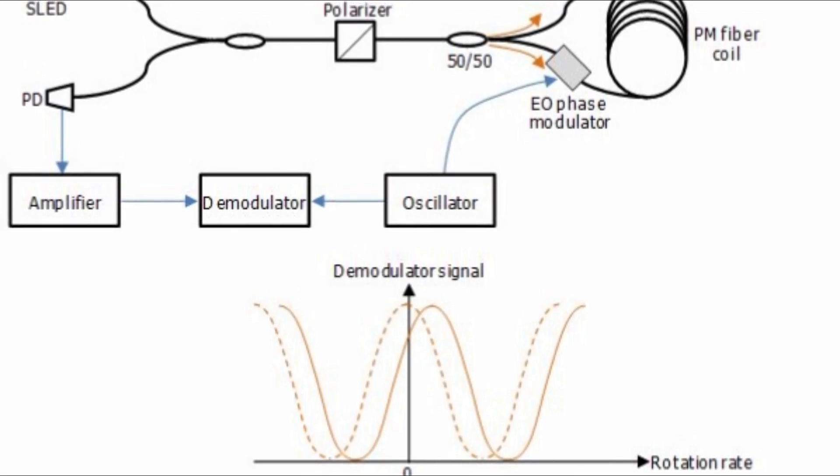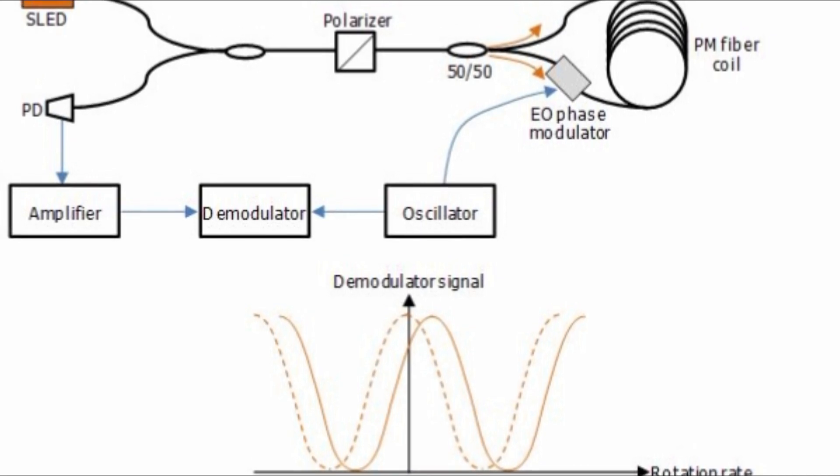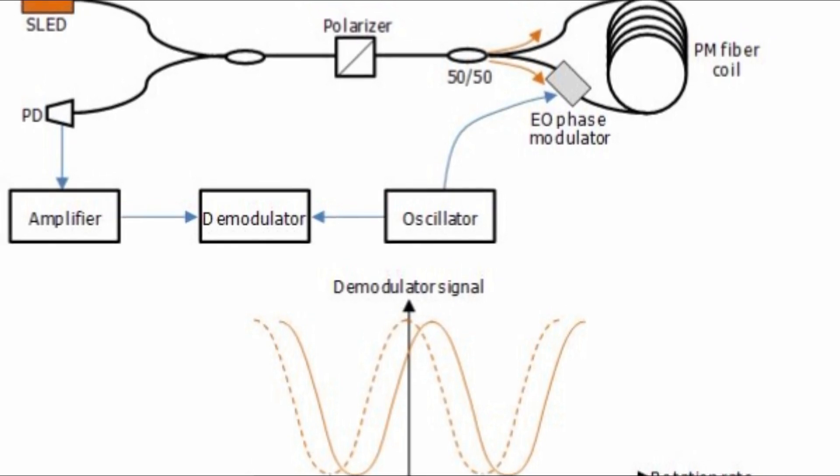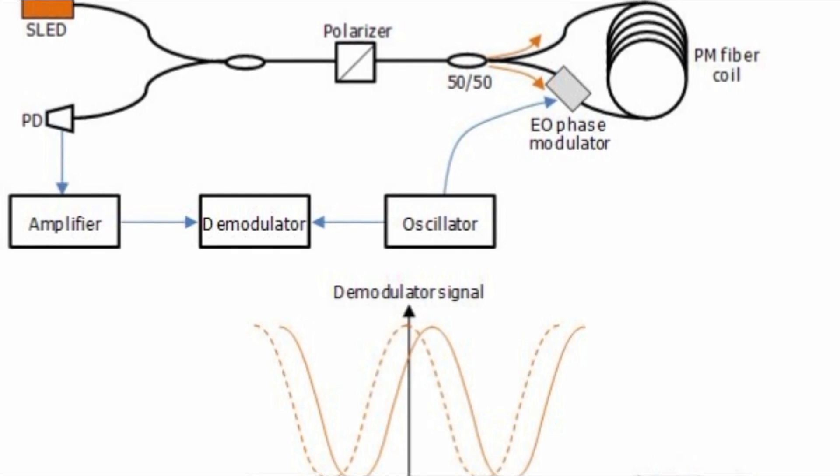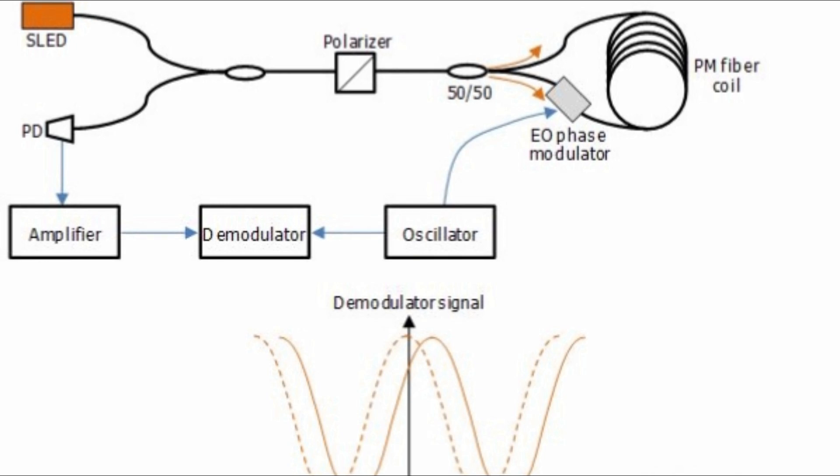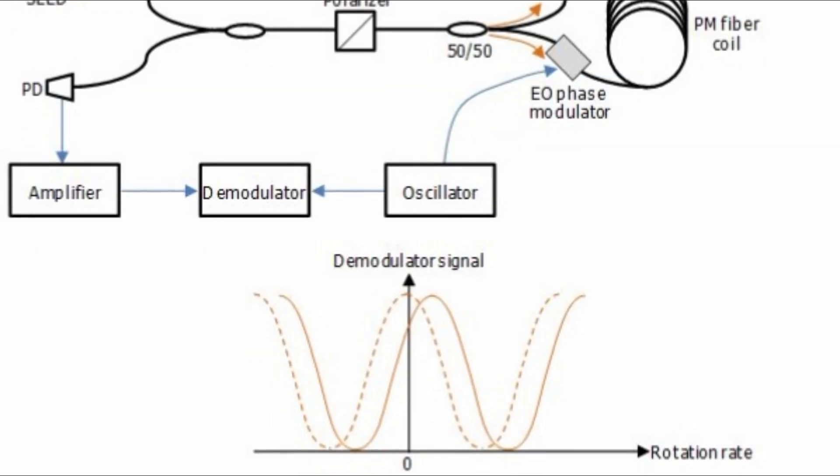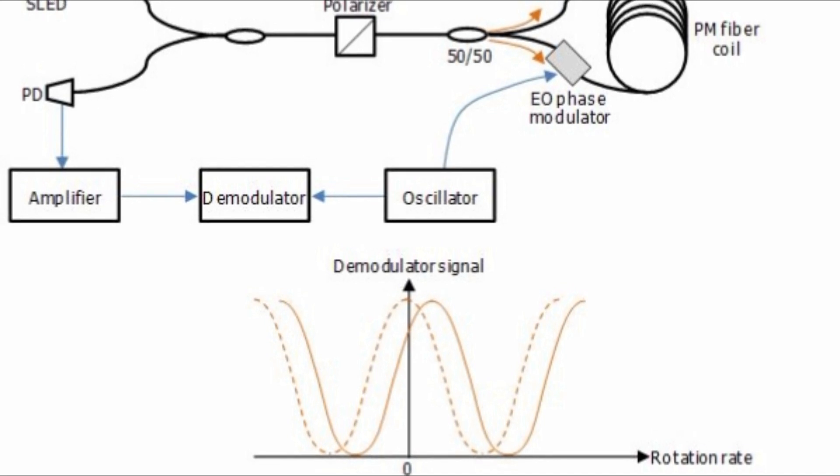The fiber optic gyroscope typically shows a higher resolution than a ring laser gyroscope but suffered from greater drift and worse scale factor performance until the end of the 1990s. Fiber optic gyroscope is implemented in both open loop and closed loop configurations.